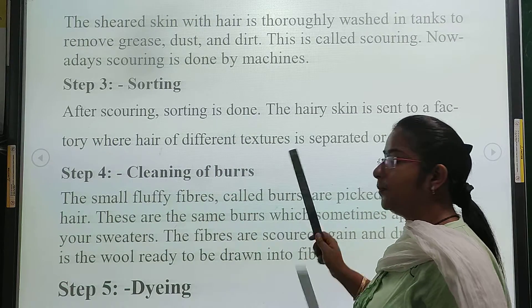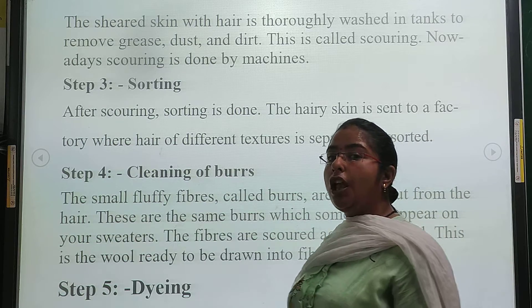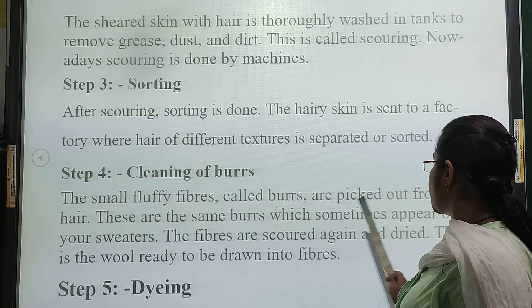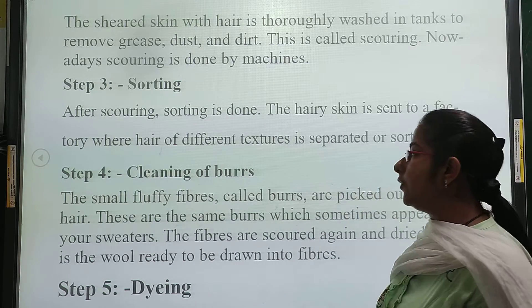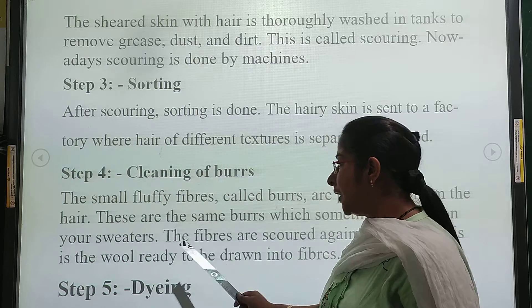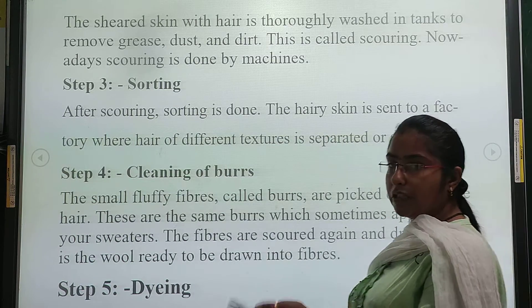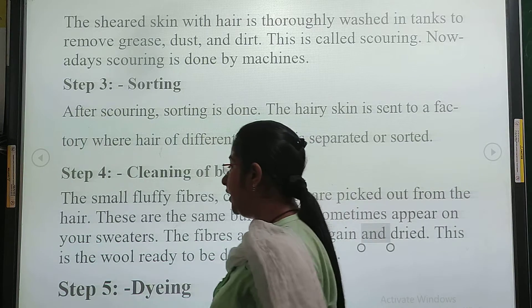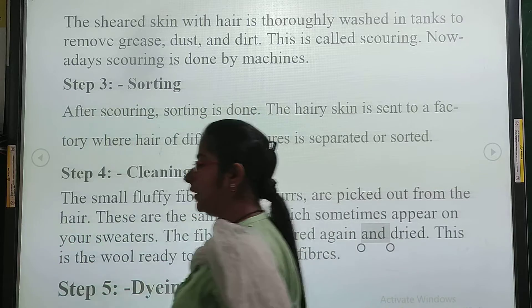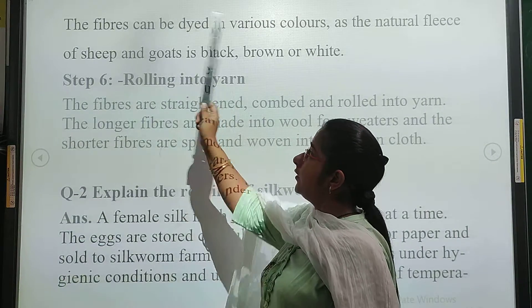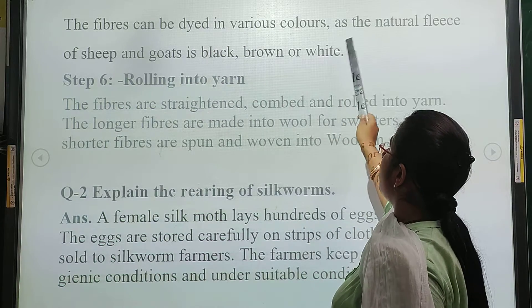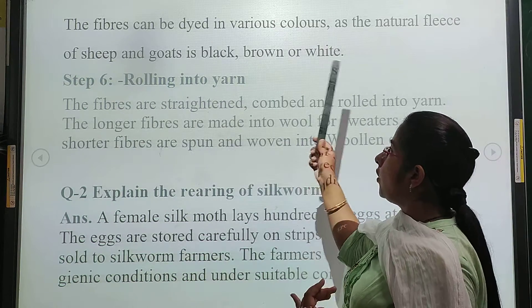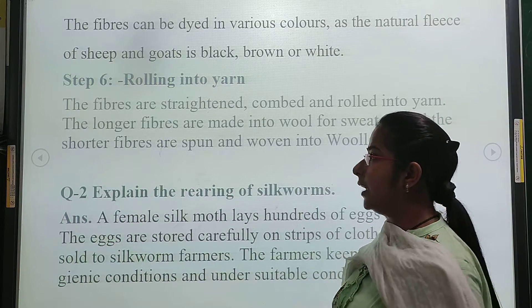Step 4 is cleaning of burrs. Burrs are small prickly fibers. We call them burrs. The small burr fibers are picked out from the hair. The fibers are then scoured, cleaned, and dried. Step 5 is dyeing. The fibers can be dyed with various colors, as the natural color of the sheep is white, black, or brown. If we want a different color, we carry out the dyeing process to color the fibers.